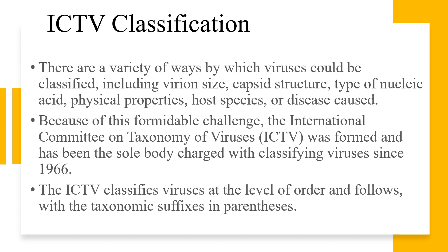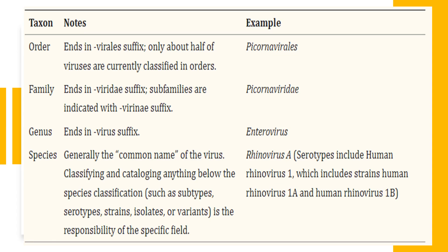Another system currently followed is the ICTV classification. Viruses could be classified in a variety of ways: their size, capsid structure, type of nucleic acid, physical properties, host species, or the disease they cause. Because of this formidable challenge, a committee called the International Committee on Taxonomy of Viruses was formed. ICTV has been responsible for classifying viruses since 1966. ICTV classifies viruses at the level of orders and follows taxonomic suffixes. Currently, ICTV has categorized seven orders of viruses with a total of 103 families within them. However, 77 virus families have yet to be assigned to an order, including notable viruses such as retroviruses, papillomaviruses, and poxviruses.